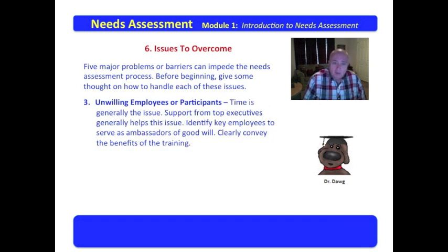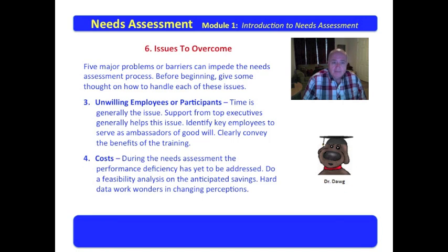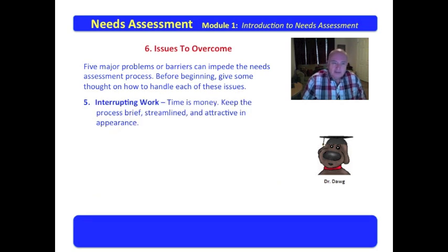Another issue is unwilling employees or participants — time is generally the concern, as they feel they have a job to do. Get support from top executives; a cover letter to a survey from the CEO sometimes carries great weight. Also identify key employees to serve as ambassadors of goodwill and clearly convey the benefits of the training. Cost is another important issue during the needs assessment. The performance deficiency has yet to be addressed, meaning you are not saving money until it is resolved. You may want to do a feasibility analysis on the anticipated savings. The last barrier is interrupting work — time is money, so keep the process brief, streamlined, and attractive in appearance.